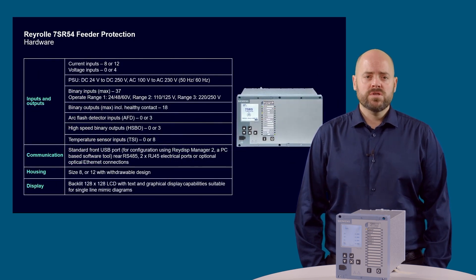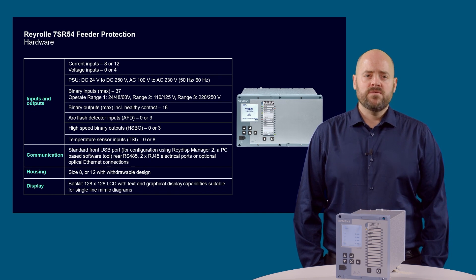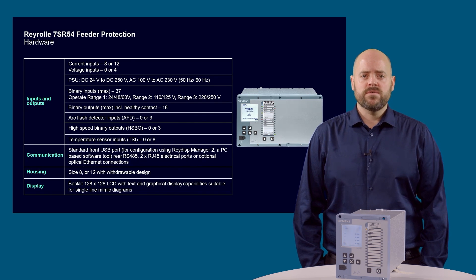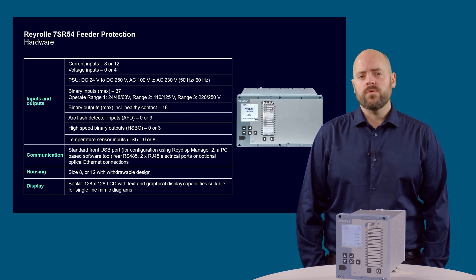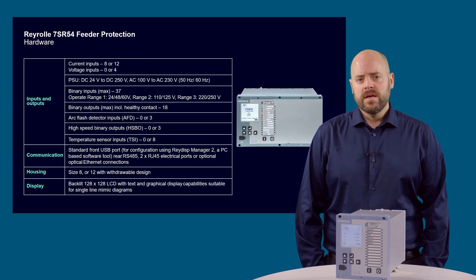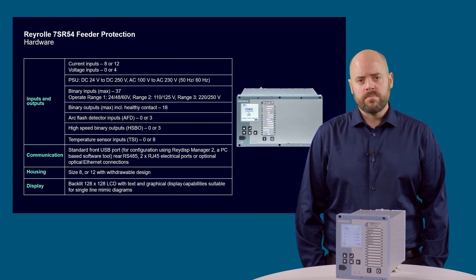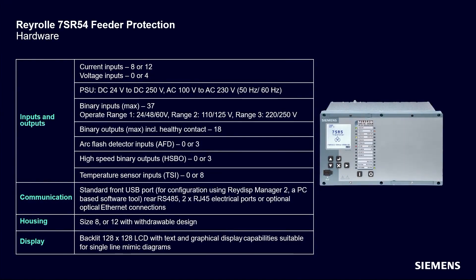Now let's take a closer look at the hardware. 7SR542 two-winding devices have 8 CT inputs and 7SR543 three-winding devices have 12 CT inputs, and both have up to 4 VT inputs. A single power supply covering all substation auxiliary voltage supply levels is used — no separate ordering options are necessary. The binary inputs have selectable operating levels and each binary input can be configured individually if required. There are optional arc flash detector inputs, high-speed binary outputs, and temperature sensor inputs.